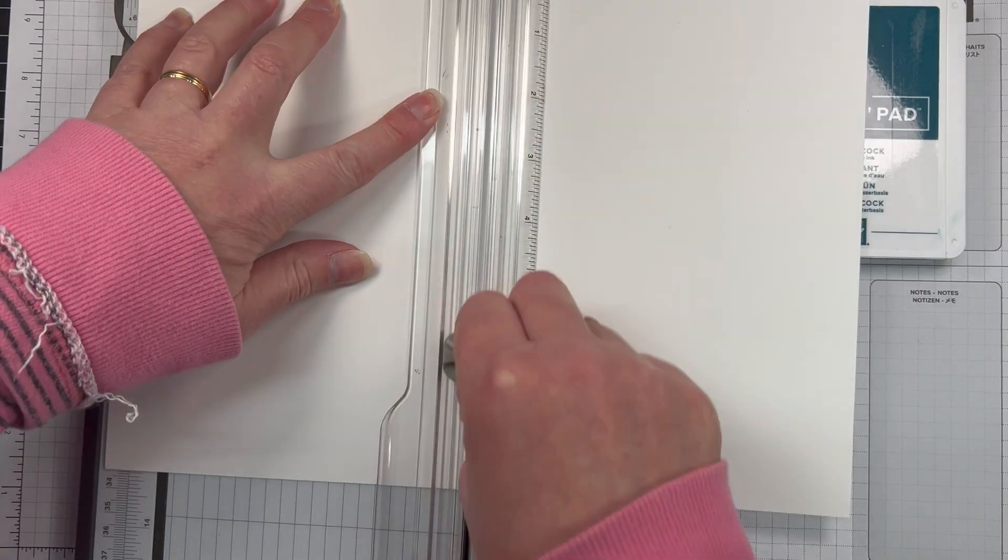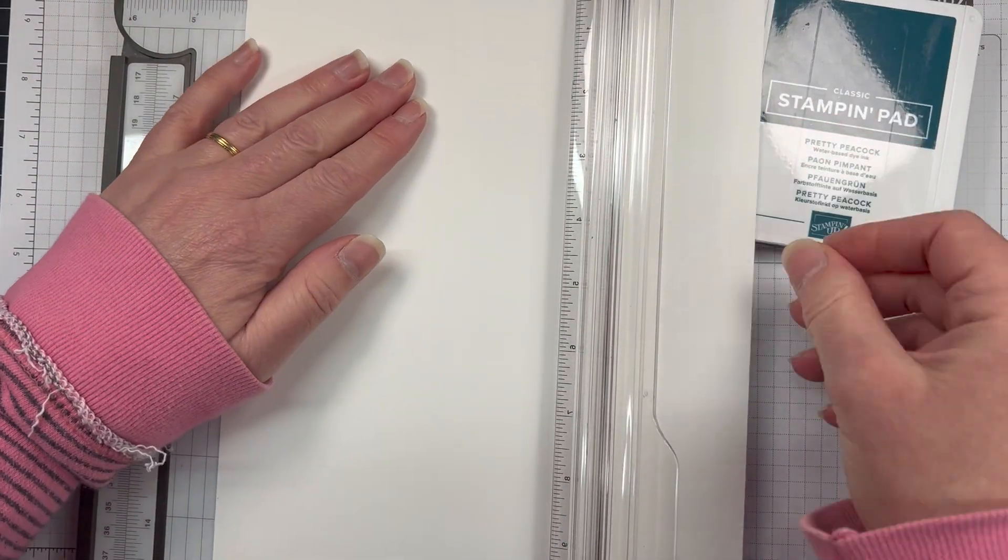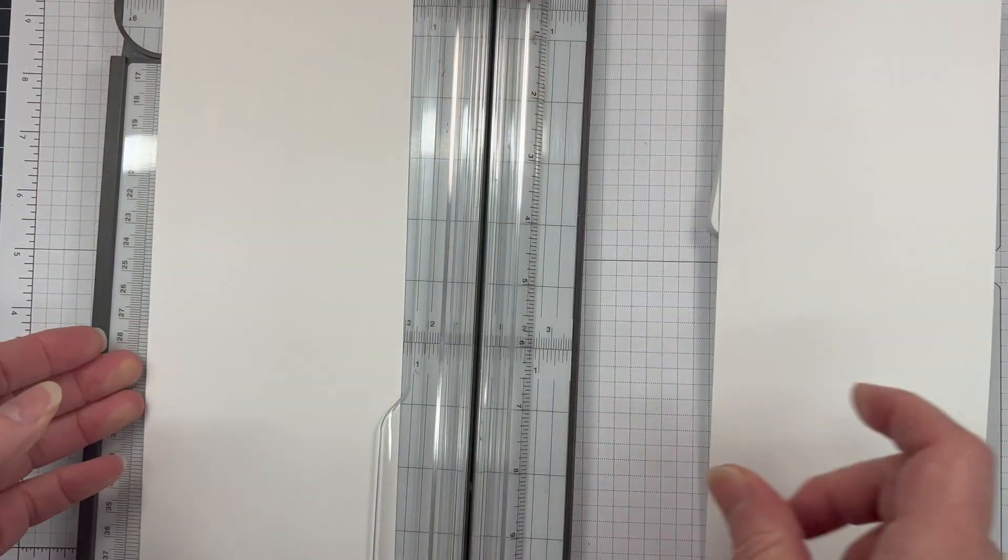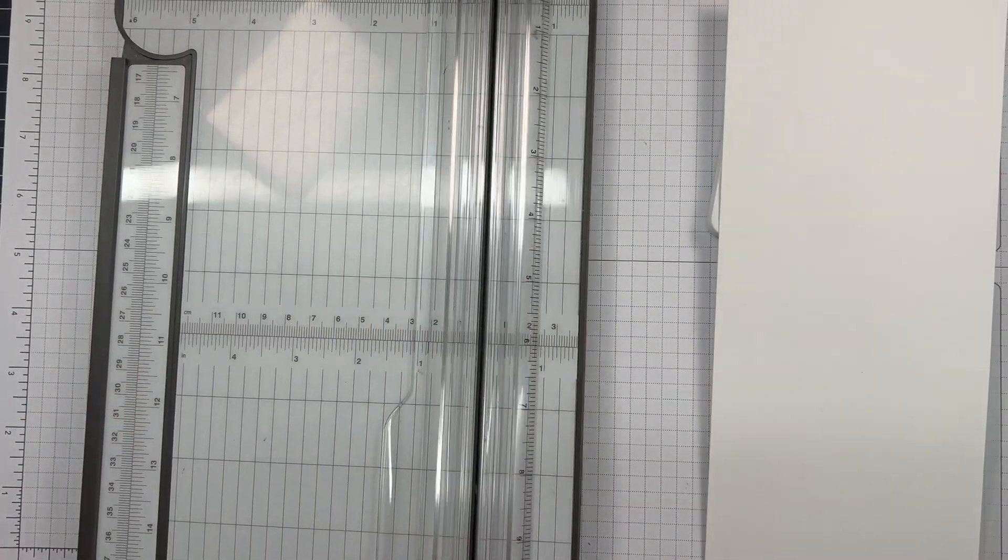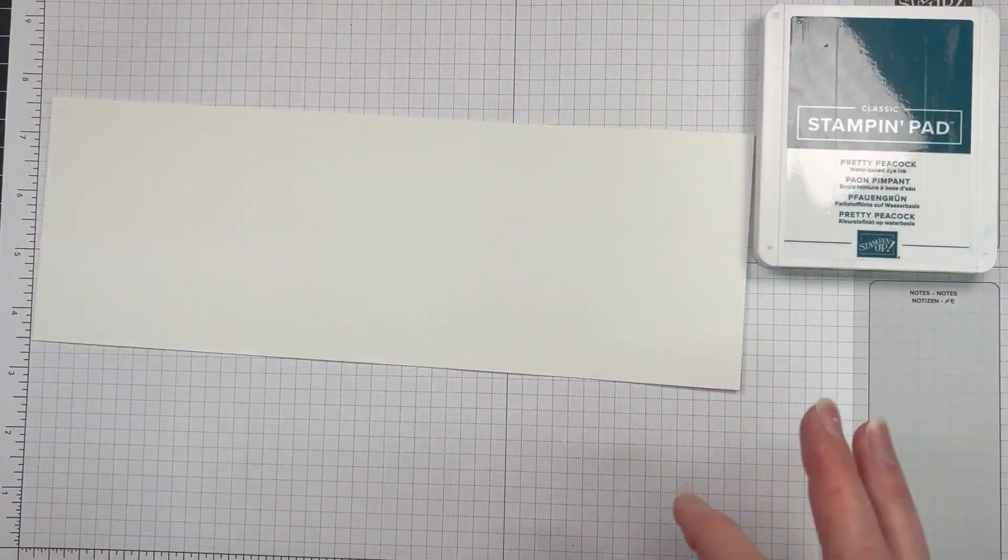I've also got Pretty Peacock cardstock and basic white thick. So I have a piece of A4 that I've just scored in half, cut in half, and then I have two card bases.